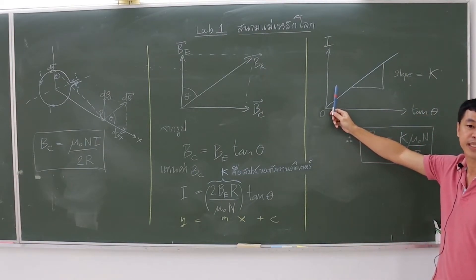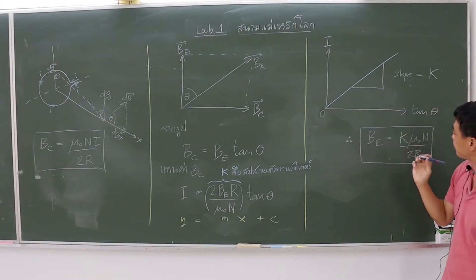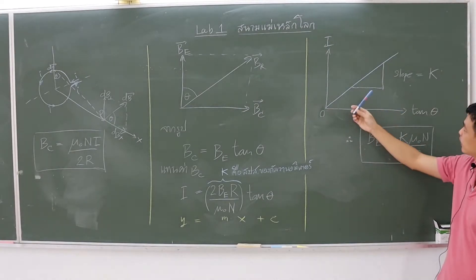Here is the example of the graph, the Y axis is current, and the X axis is tan theta. The slope of graph is K.